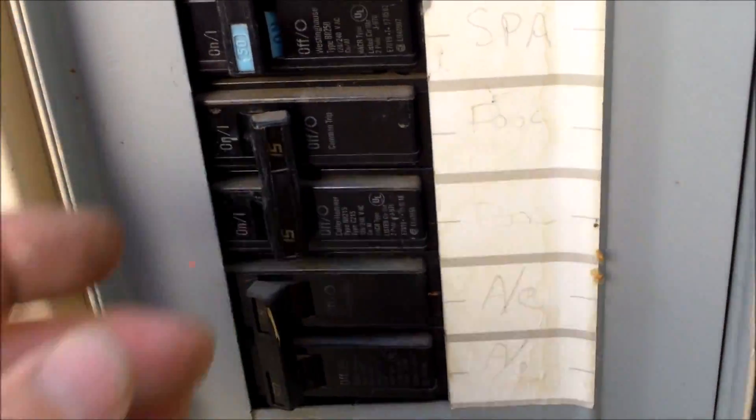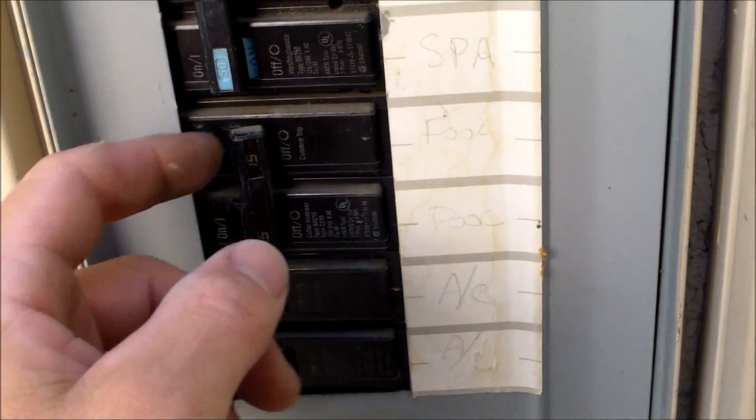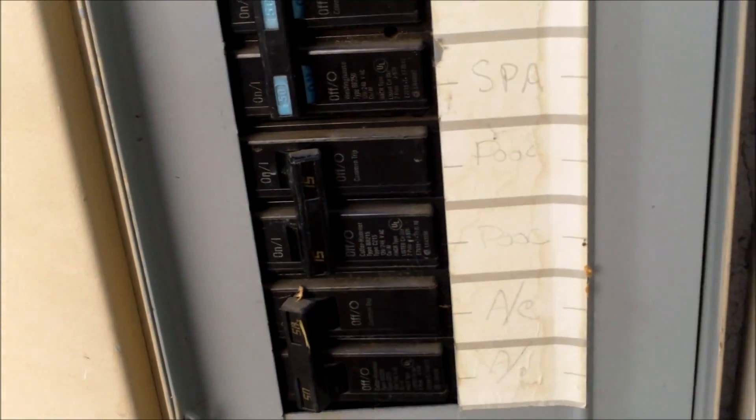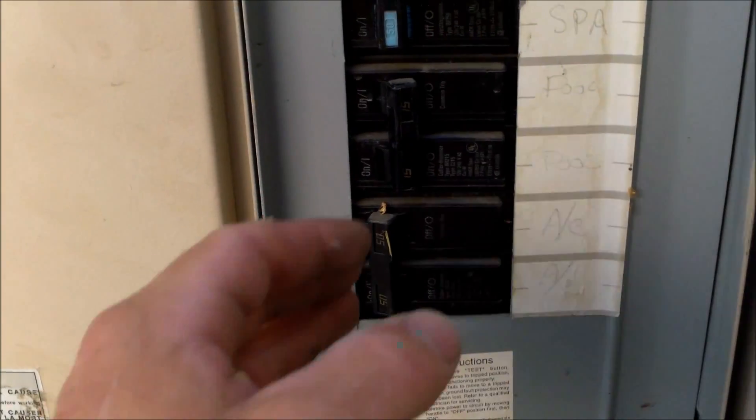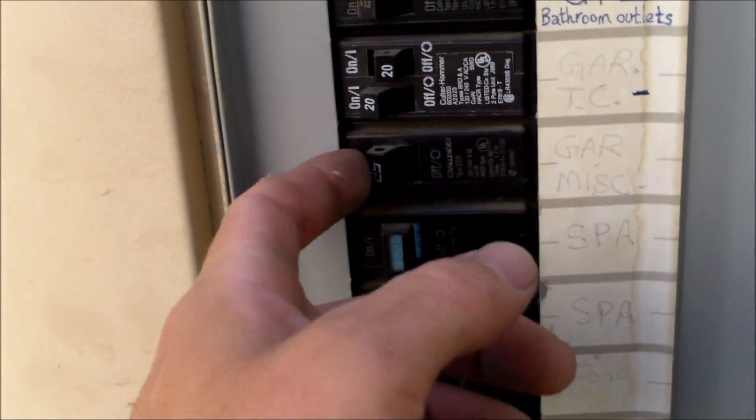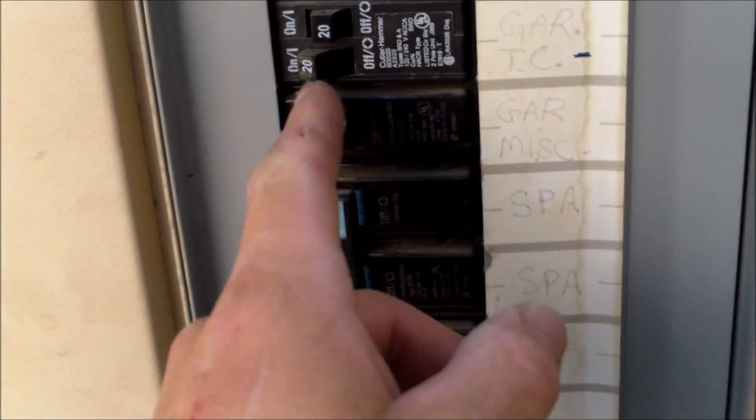You want to make sure you turn the breaker off before you do anything. You can tell this is a 220 because the breaker is a double breaker. So you know you have a 220 volt breaker here versus a 110 which would look something like this here. If your pump was hooked up to one of these, you'd have a 110 pump. Now I got some room here, I can see the old wiring.